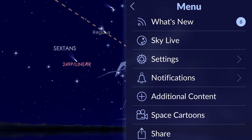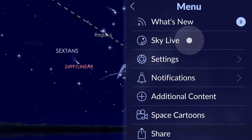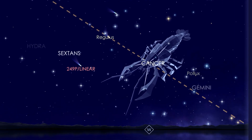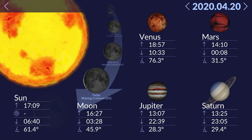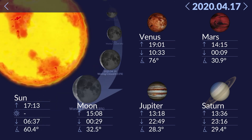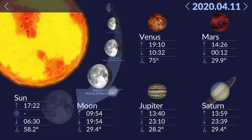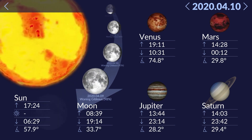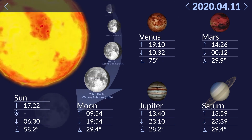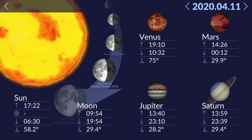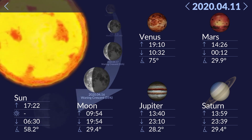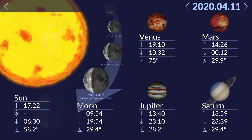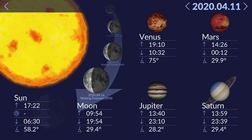Tap the menu icon in the lower right corner of the screen and choose Sky Live. You will be presented with information about the objects' rise and set times, elevation angle, daylight hours, and the phase of the moon.